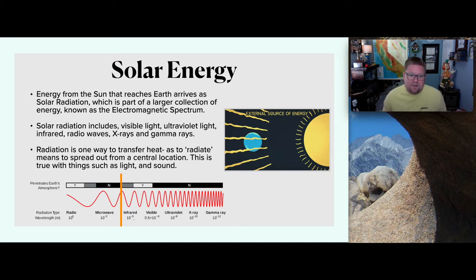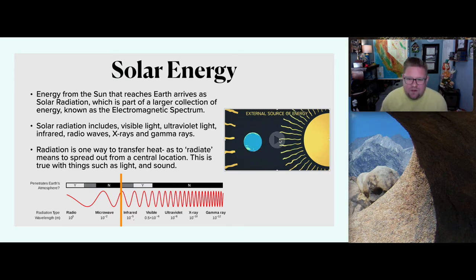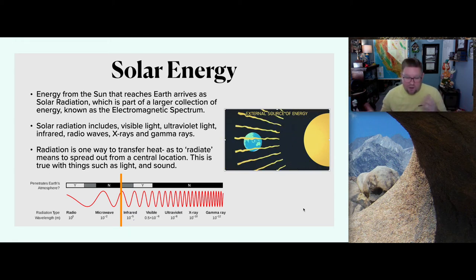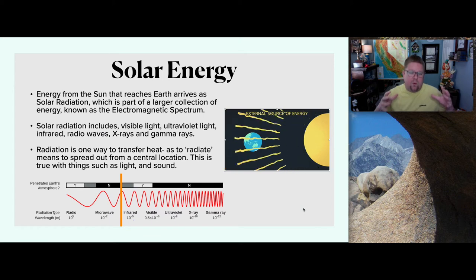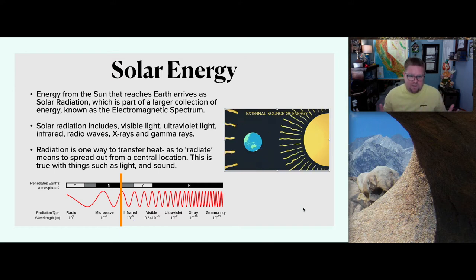What is radiation? Radiation is one way to transfer heat — to radiate means to go out from a central location. The Sun is radiating energy outward, and we know that energy is being observed and taken in by the Earth itself. That radiation from the Sun is going in all different directions, but we're only focusing on what reaches the Earth. That amount we consider reaching the Earth is 100% of our budget.